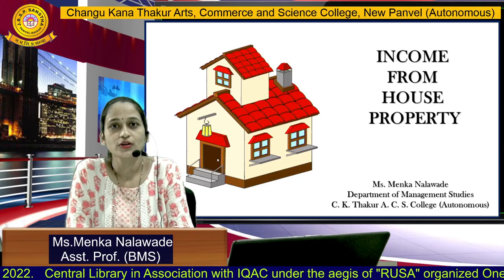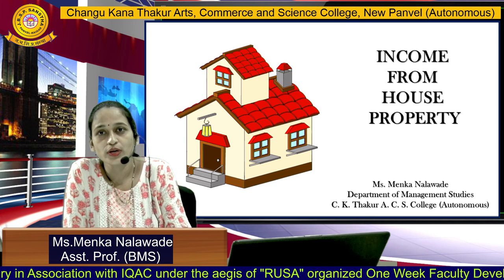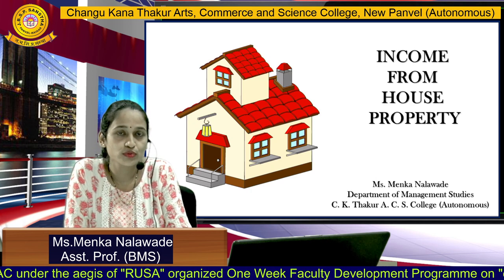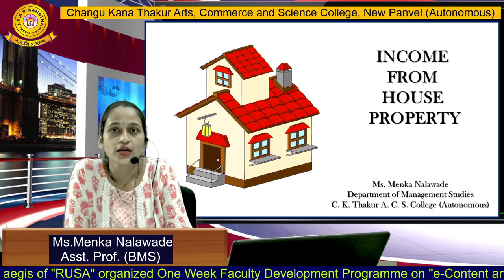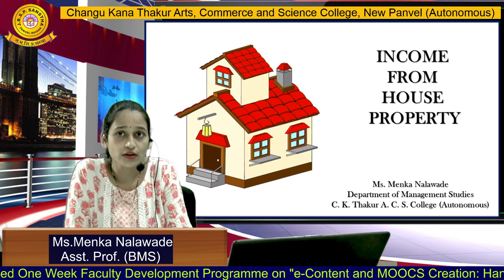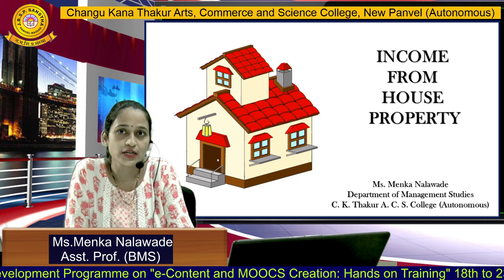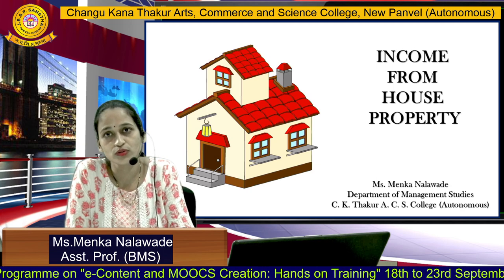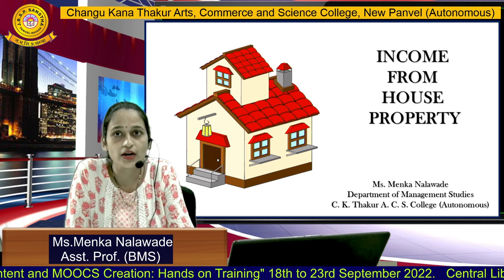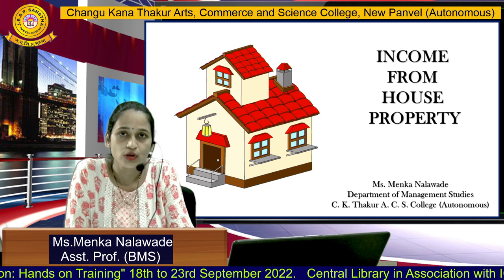Hello everyone, this is Minka Nalaude from C.K. Thakur College and I am from the BMS department. Today we will be looking at the direct taxes subject, and from that we are going to study income from house property. Income from house property is one of the five heads of income: income from salaries, income from house property, income from capital gains, profits and gains from business and profession, and income from other sources. These are the five heads of income in direct taxes on the basis of which we have to charge and pay tax on our income.